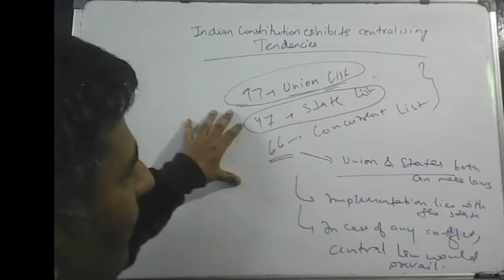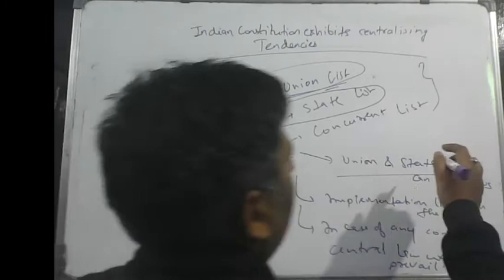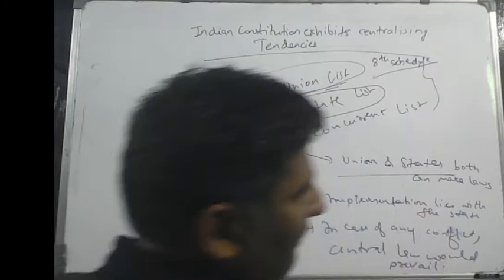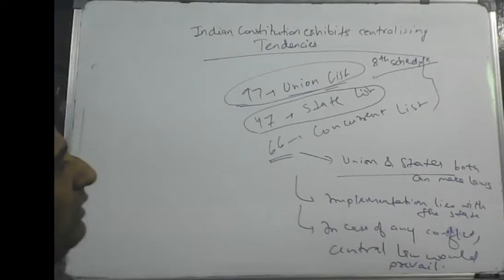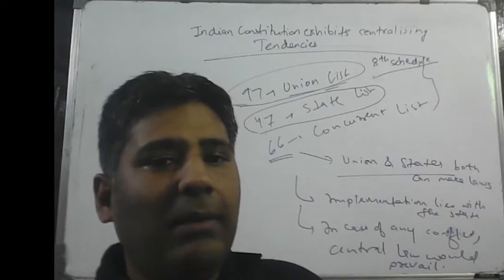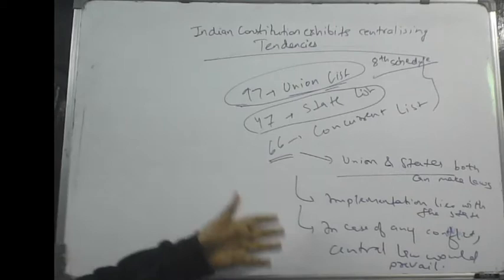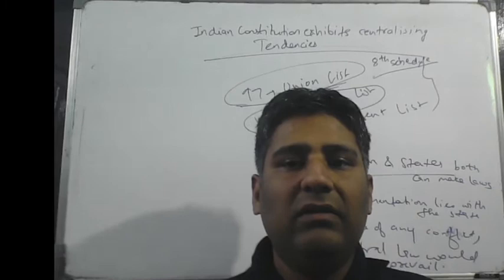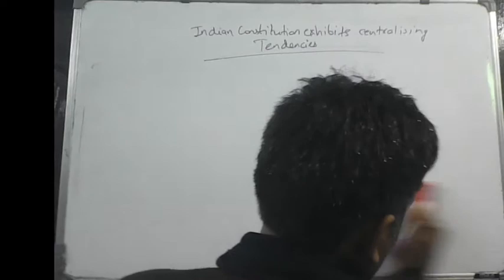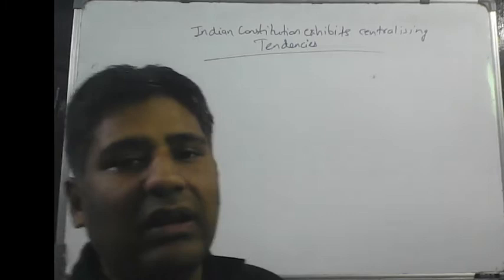As you can see, our Constitution exhibits centralizing tendencies. This is the 7th Schedule which mentions the various lists on which the center as well as states have the competency to make laws. We have more subjects in the Union List while we have very less subjects in the State List. Also, in the Concurrent List, in case of any conflict, central law would prevail. So our Constitution definitely exhibits centralizing tendencies.